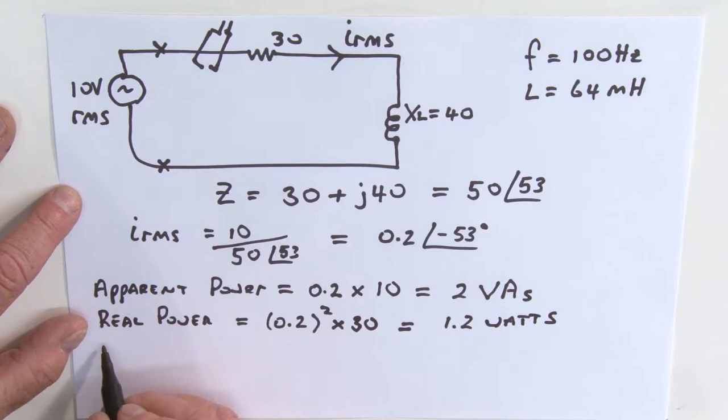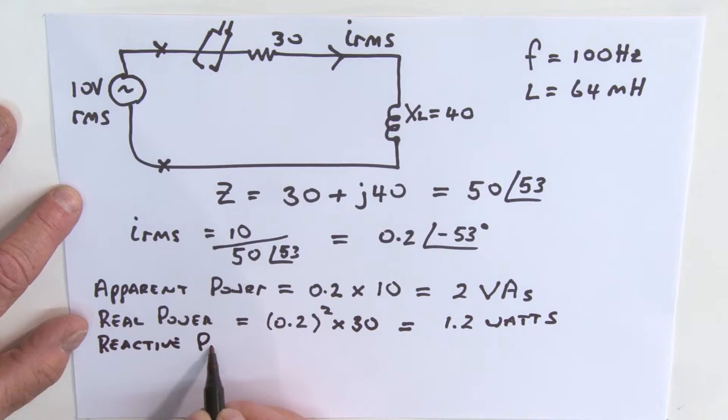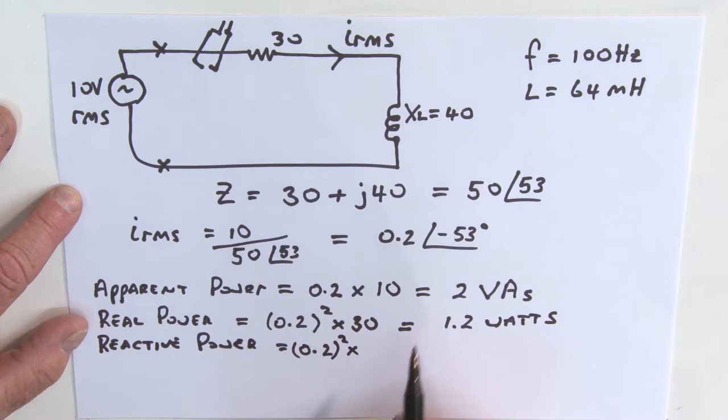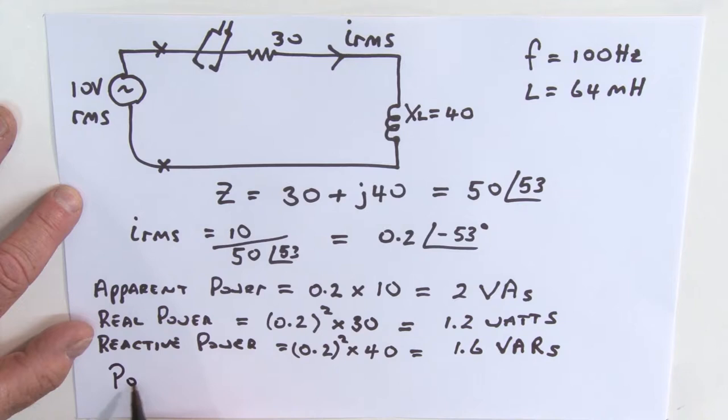We can talk about reactive power. Our reactive power is going to be equal to, once again, this current, 0.2 squared, but this time multiplied by the reactance, which is 40 ohms. That is equal to 1.6, and our units are volt amps reactive, or VARs.